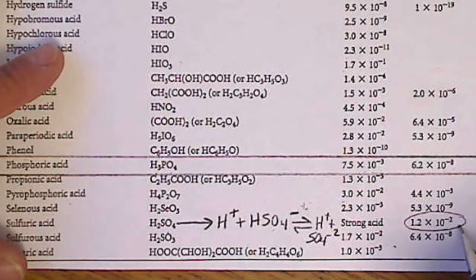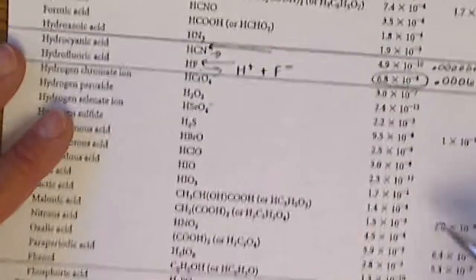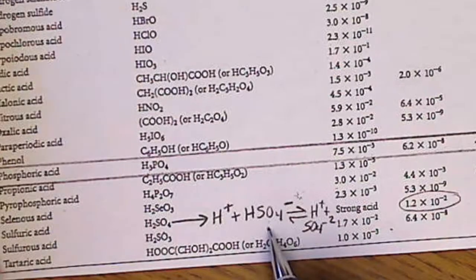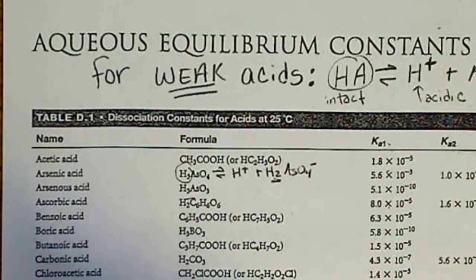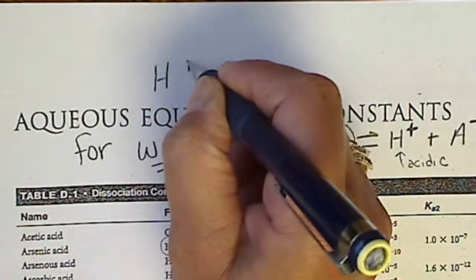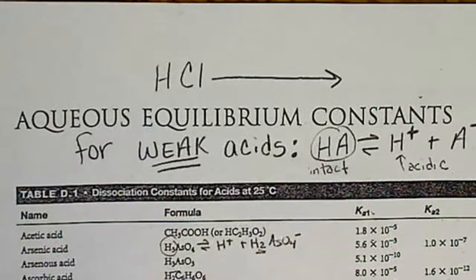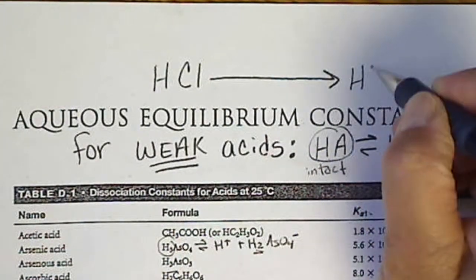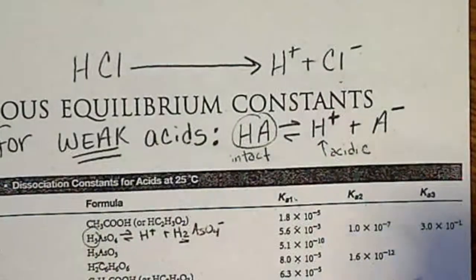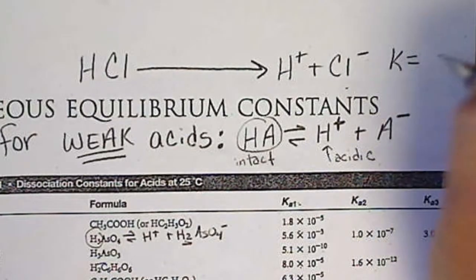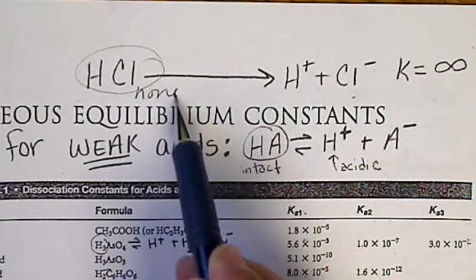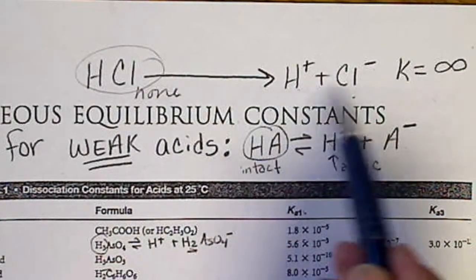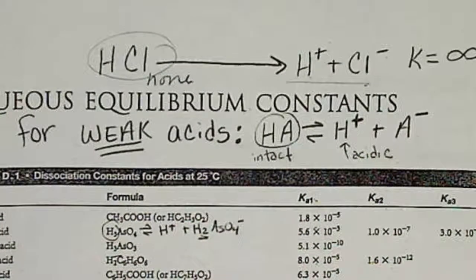Some Ka values on the table are around 10⁻¹⁰ to 10⁻⁹, which are relatively small. If we are dealing with a strong acid, it is not going to be on this table because strong acids do not have an equilibrium set up. A strong acid like HCl — I'll exaggerate the arrow going all the way to the right — gives H+ plus Cl⁻ with no equilibrium. If we had to assign a K value, we would call it infinity, meaning 100% dissociation with none of the original acid left over. We're going to see that this makes it easy to calculate the pH.